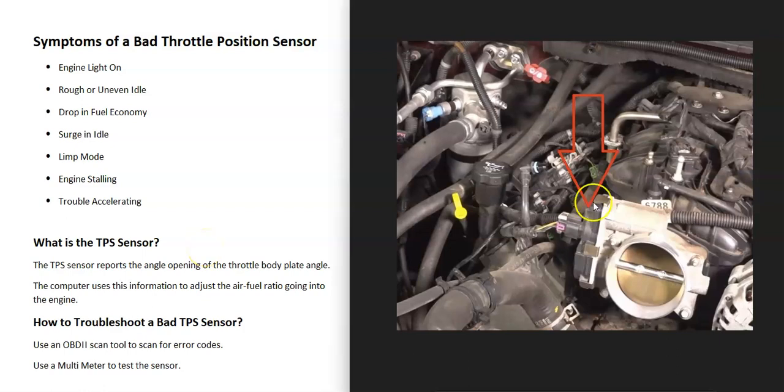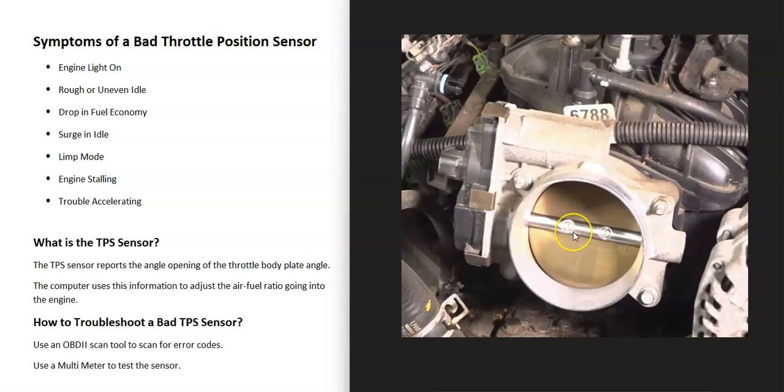And so what is the throttle position sensor? Well, the throttle position sensor is located on the throttle body, and it basically measures how open this plate gets right here inside of the throttle body. When you go to step on the gas, this plate is going to open, and as you do, more air is going to rush into the engine. And the TPS sensor is located right here, it's measuring this plate opening, and the onboard computer is using this information along with other sensors to measure how much air is going into the engine and adjusting the air-fuel ratio mixture as you do this.